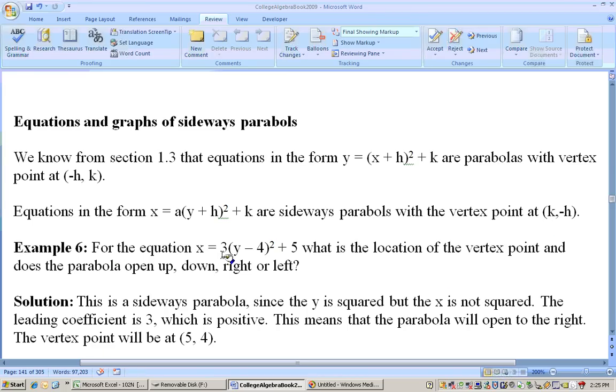For this equation, x = 3(y - 4)² + 5. What is the location of the vertex point? And does the parabola open up or down or right or left? Well, see the y is squared, not the x. This type of parabola up here where the x is squared opens up or down. Look at the sign in front. The sign is positive, it opens up. The sign is negative, it opens down. Well, here it's solved for x and the y is squared. That's going to be a parabola that opens to the right or left. Think of the right as being the positive direction. So this leading coefficient here is positive. So this is going to be a sideways parabola that opens to the right-hand side.